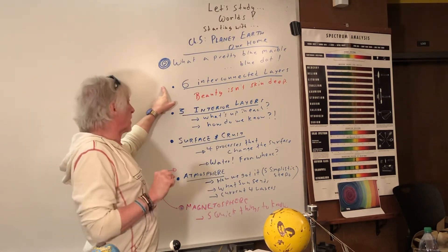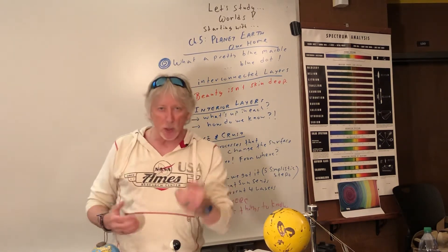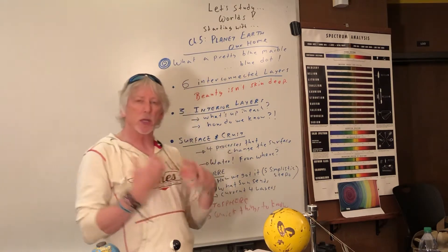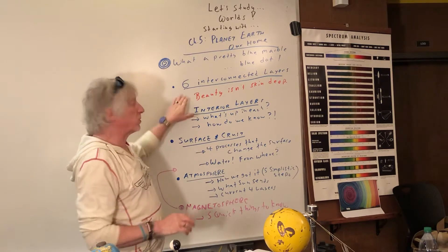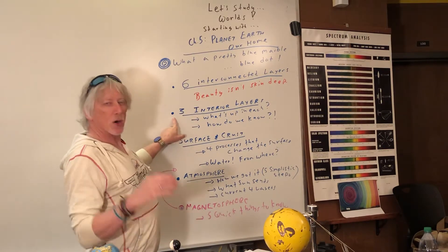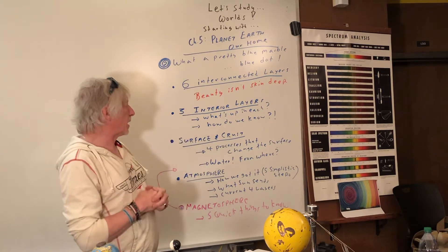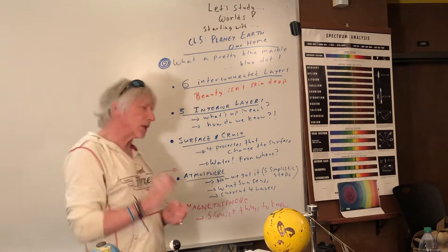Earth has got six interconnected layers. That's how I'm going to do it. You can get into a lot of detail. You can be a geologist and get into lots of details about understanding Earth. We'll see that beauty isn't skin deep. There are three interior inside layers. We'll see what's happening in each. How do we know? We'll give you a little taste.